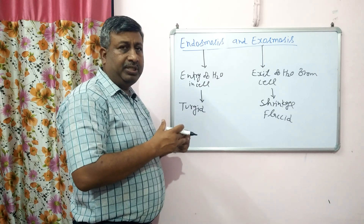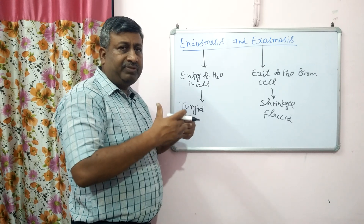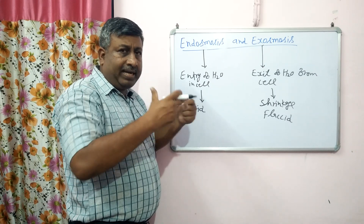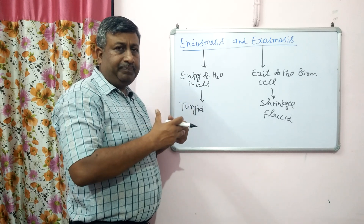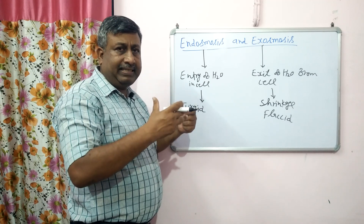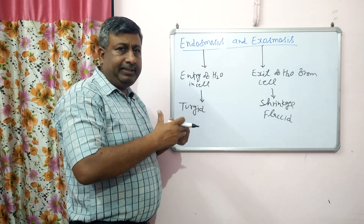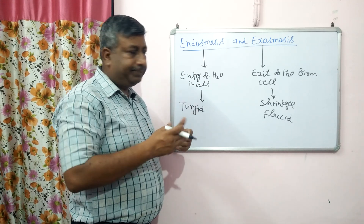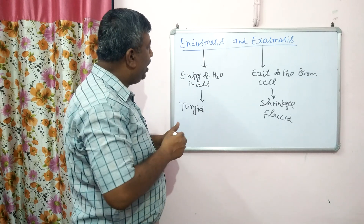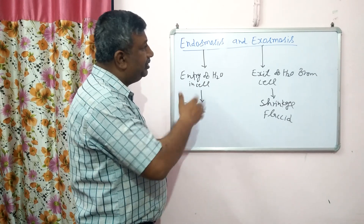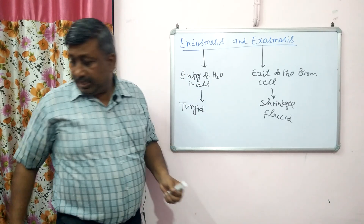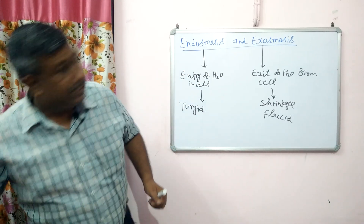In case of endosmosis, water content of the cell increases, it swells, size increases, and cells become turgid. So why do these endosmosis and exosmosis processes take place?